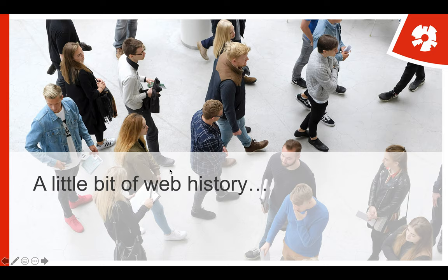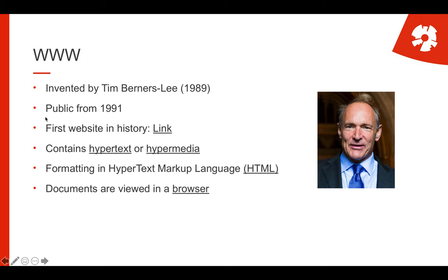Let's look a bit at where the web comes from and why we do web programming — this is just a quick run through the history. The World Wide Web was invented by Tim Berners-Lee in 1989 but made public in 1991. The first website in history is actually still accessible. It's just hypertext — the original idea of having text, of having information, where 'hyper' essentially means extending it with additional elements, the most important of which is probably the hyperlink, so we have text and can reference other hypertexts.